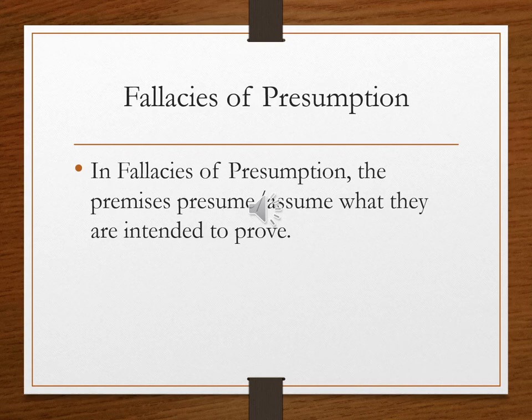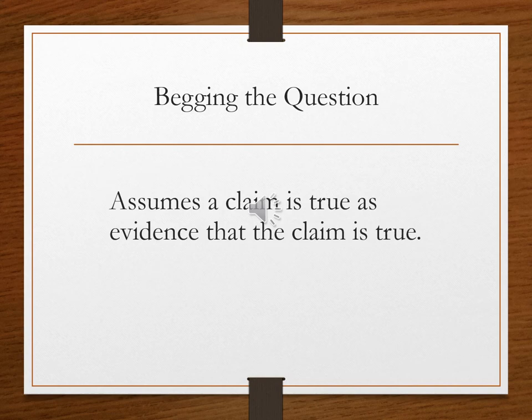Let's take a look at the first type of fallacy of presumption: begging the question. The fallacy of begging the question is not really about questions. Rather, we beg the question when we assume a claim is true as evidence that the claim is true. For example, if I say you should believe that my coffee cup is orange because my coffee cup is orange — I haven't actually presented any evidence for the conclusion except for the conclusion itself. Begging the question is a disguised assertion without any evidence whatsoever.